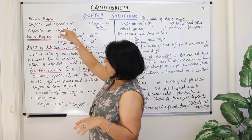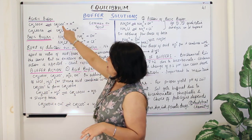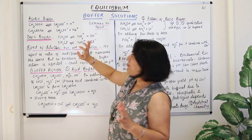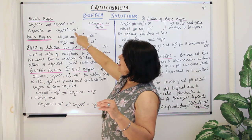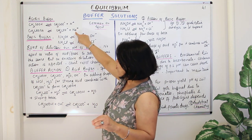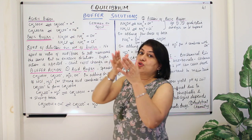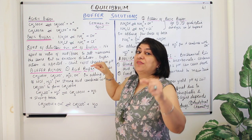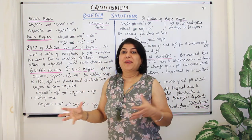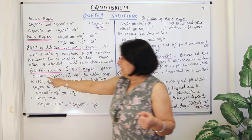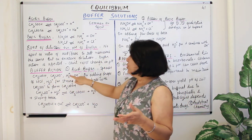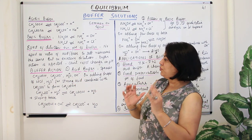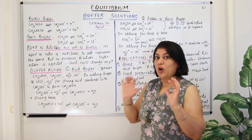In solution, you have CH3COOH, CH3COO⁻, and H3O⁺ from the acid's partial dissociation. The sodium ion remains hydrated and is not significant. Since H3O⁺ is present, water also provides OH⁻. So the four significant species in the acid buffer solution are: CH3COOH, CH3COO⁻, H3O⁺, and OH⁻.